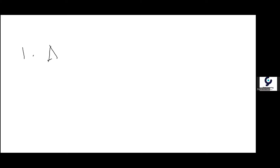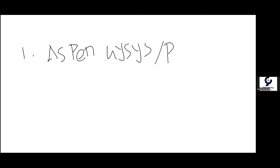I want to mention what kind of software a process engineer must know. The first one is Aspen HYSYS or Aspen Plus. Aspen HYSYS or Aspen Plus is not a free license, so you have to buy a license to get access, and I think this license is quite pricey compared to other software.